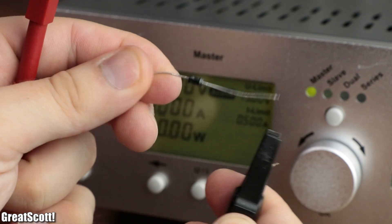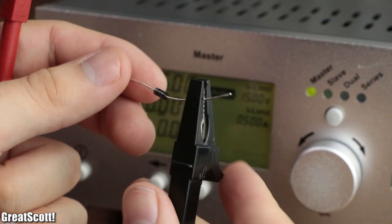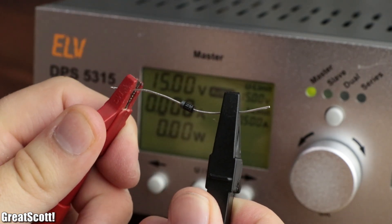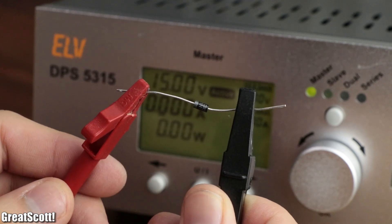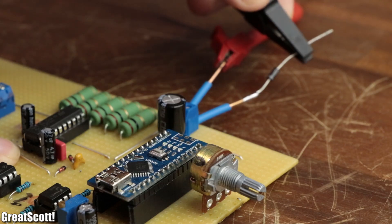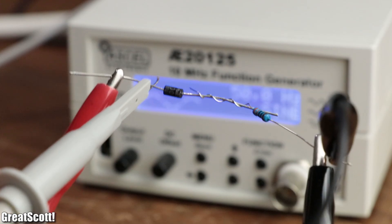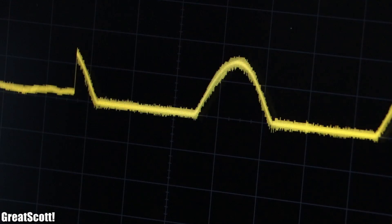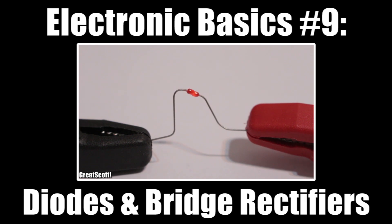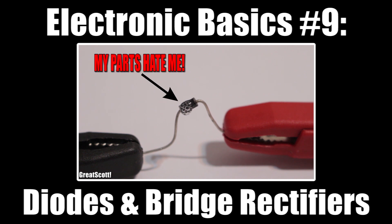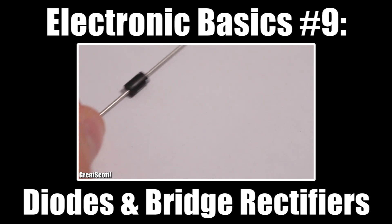But if we reverse the voltage potential at the cathode and anode side, no current will flow through the diode. This makes it perfect for reverse voltage protection or to rectify AC voltage to DC voltage. But you should already be familiar with those concepts since I talked about it during a previous basics video.